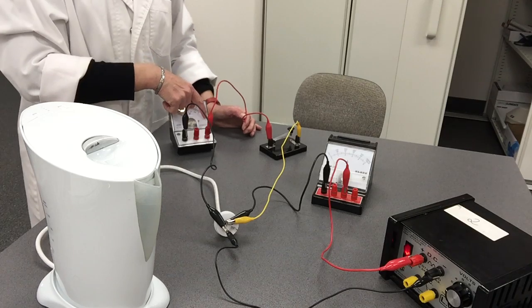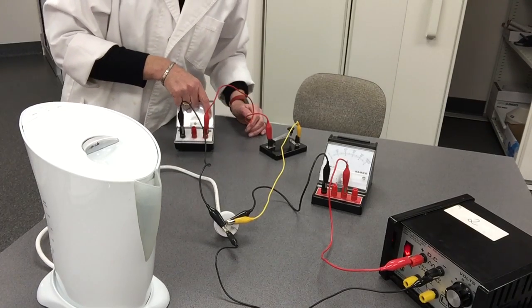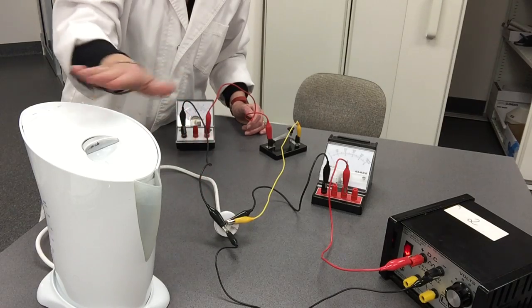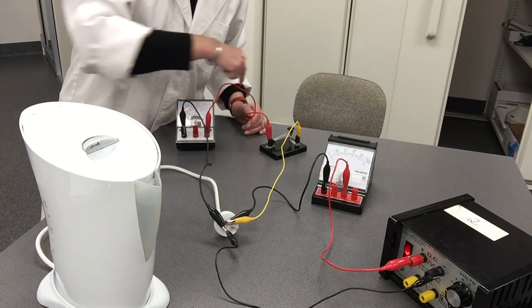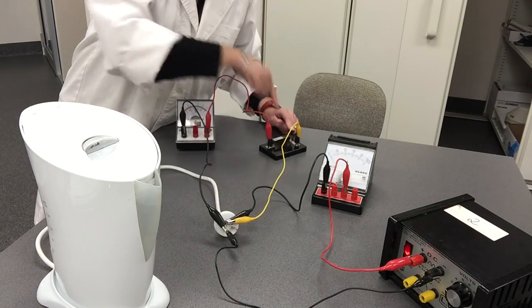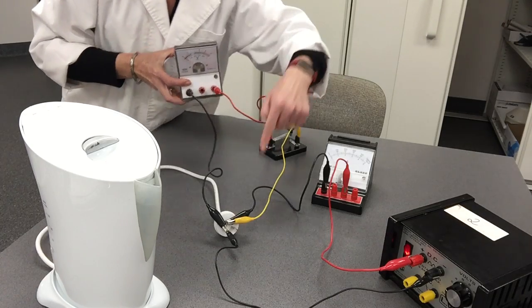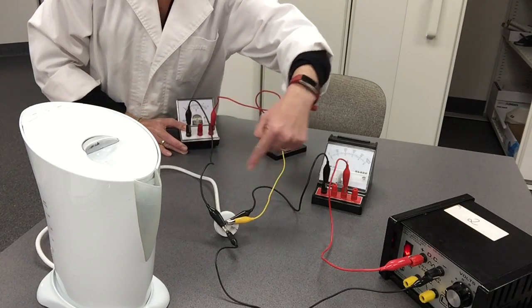This one goes up in through my kettle, comes back, continues along here through my voltmeter. Remember, my voltmeter measures the energy drop across my kettle, the energy that my kettle uses up.